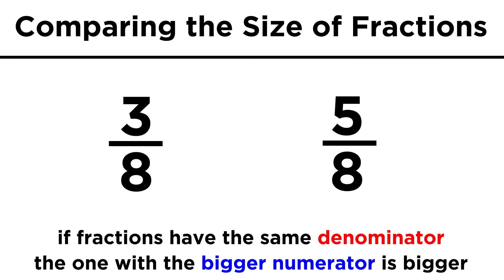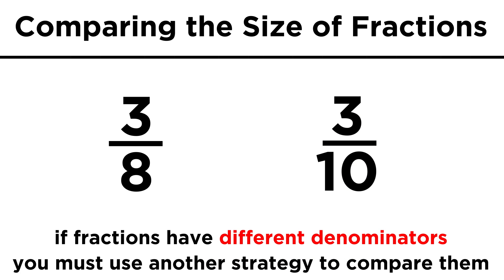If two fractions have the same denominator, it is easy to see which one is greater. If the denominators are different, we can do a number of things. Let's say we are comparing three eighths and three tenths. Which is greater?